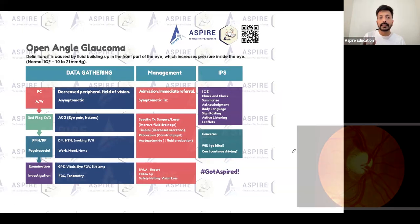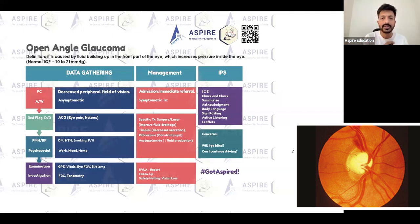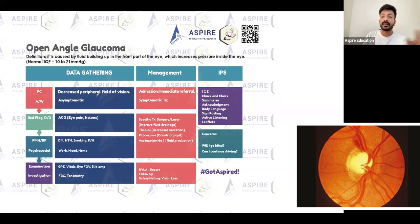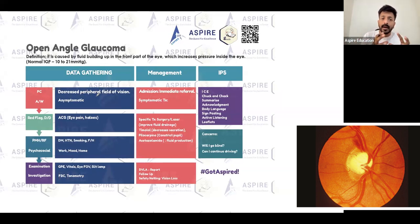Most patients with open angle glaucoma are asymptomatic. But of course they can have symptoms as well. For example, the patient may complain of blurring of vision — that can be the presenting complaint. They might also have color halos. Sometimes these patients complain of decreased peripheral field of vision.